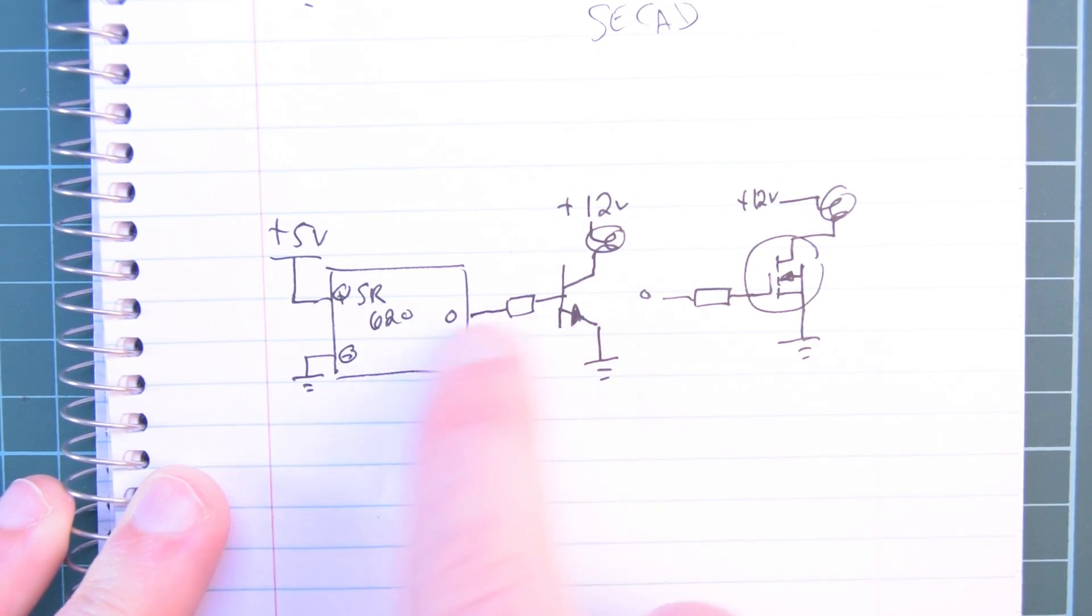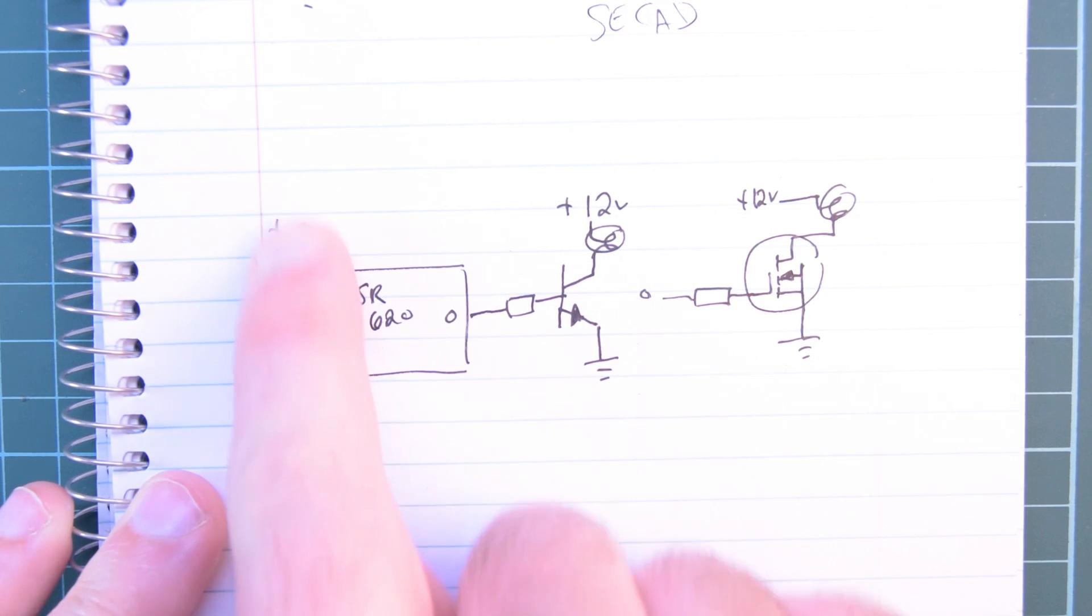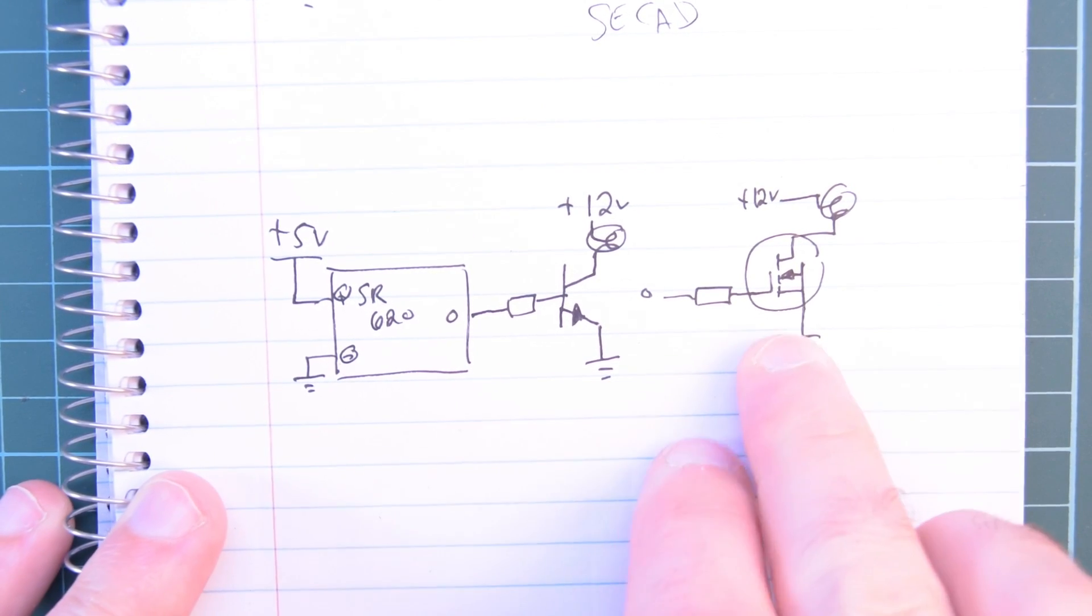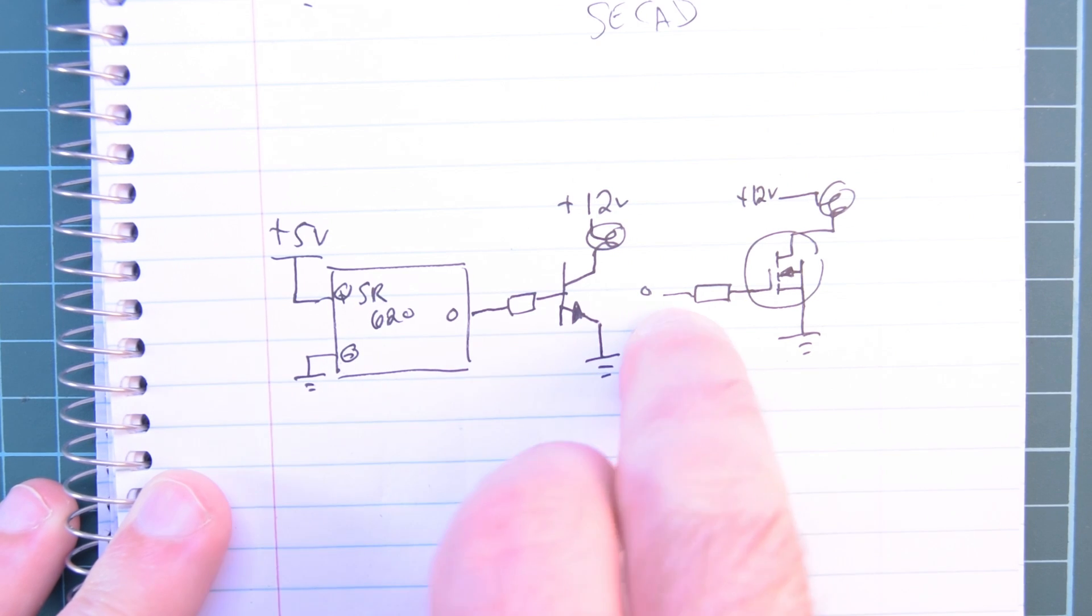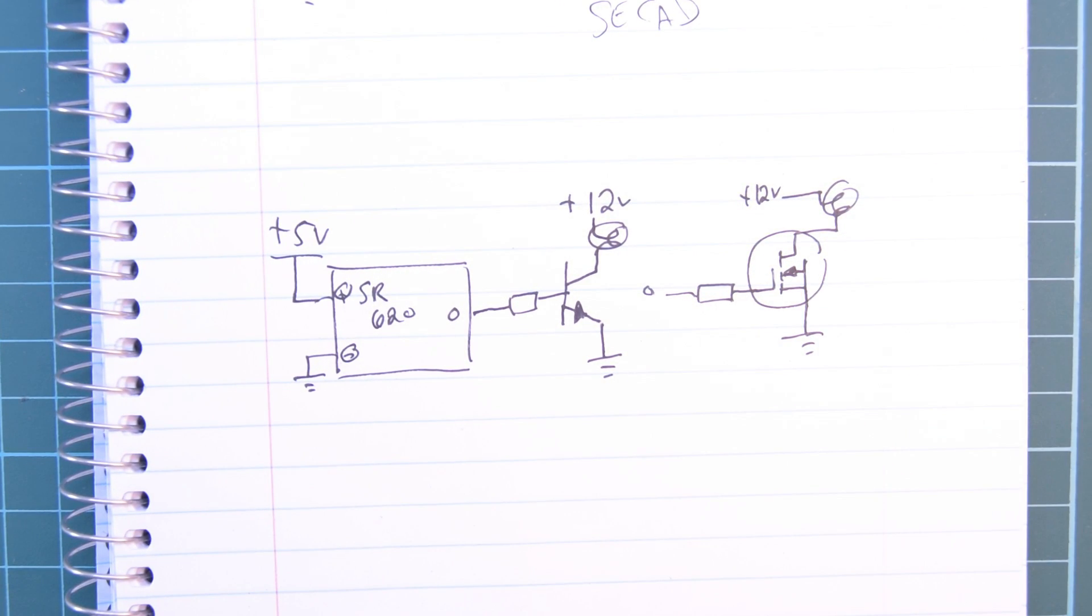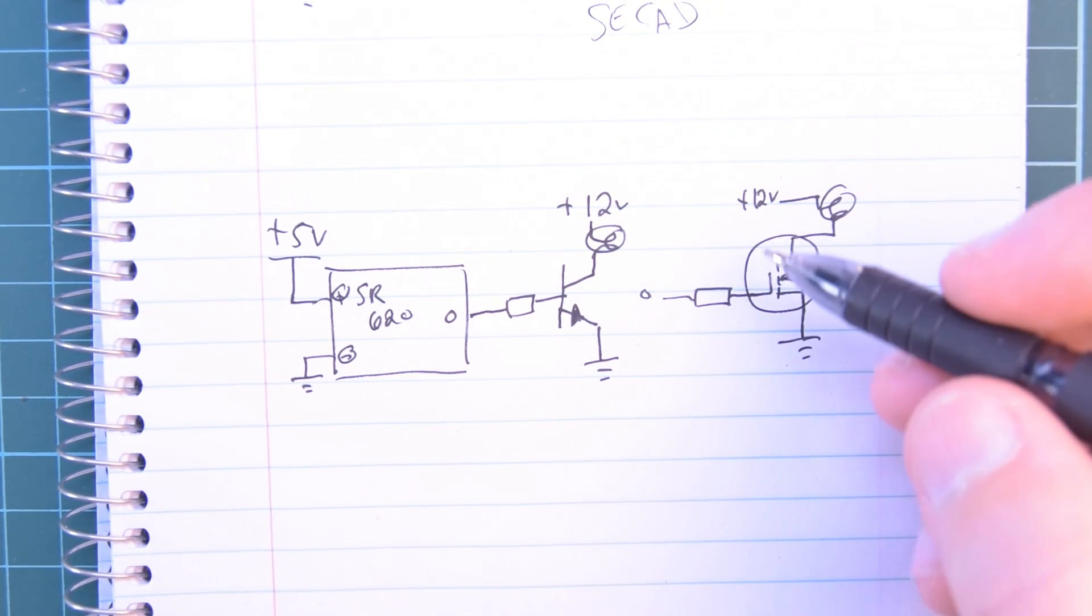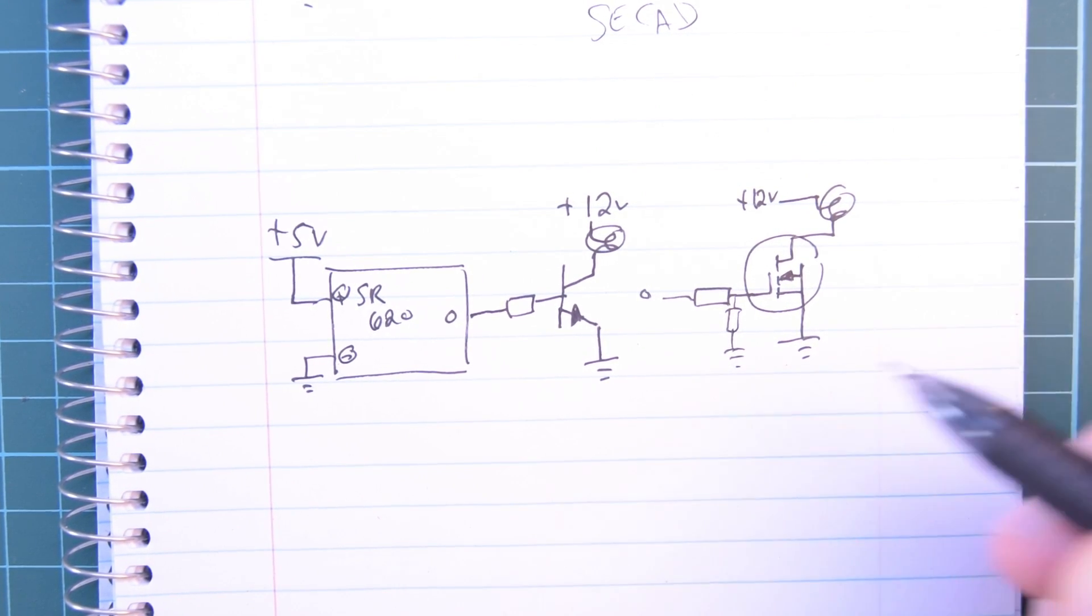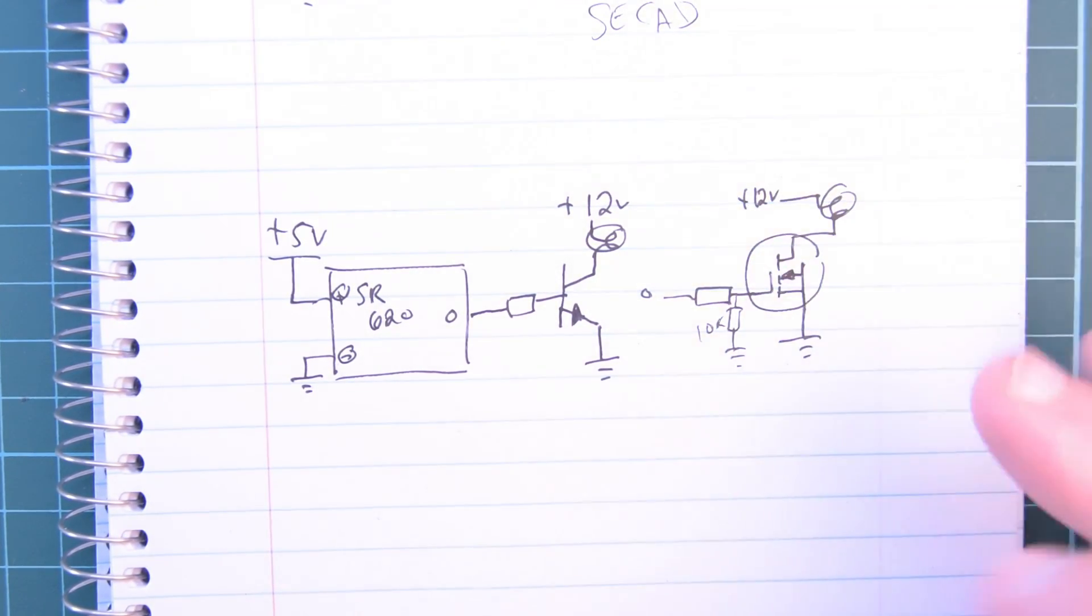And this will actually turn on the LED when this is active. When there's an output on here. And the same thing, if you have a MOSFET, you can just do the same thing. You put a resistor, a gate resistor. For the MOSFET, you may want to either pull it up or pull it down. So, either you put another, like a 10K down or a 10K up. Just so that the gate is not floating.